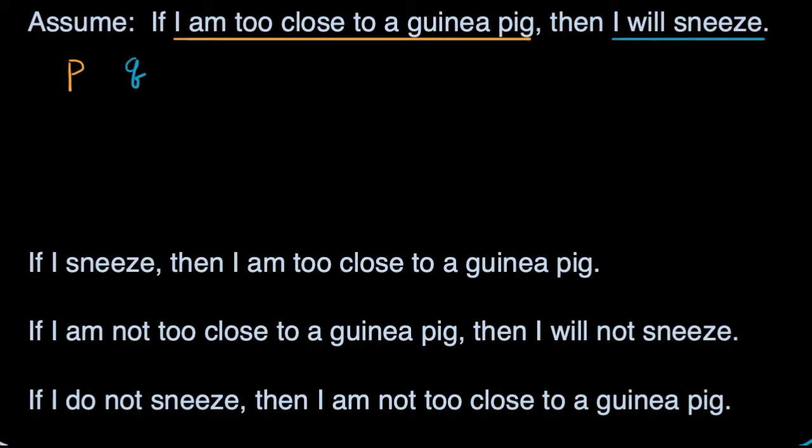One way to think about it is P is implying Q here. And we could even draw this as a Venn diagram. So we could think about all of the times that I am too close to a guinea pig. So this is scenario P right over here. I am too close to a guinea pig. And all of these times I will sneeze.